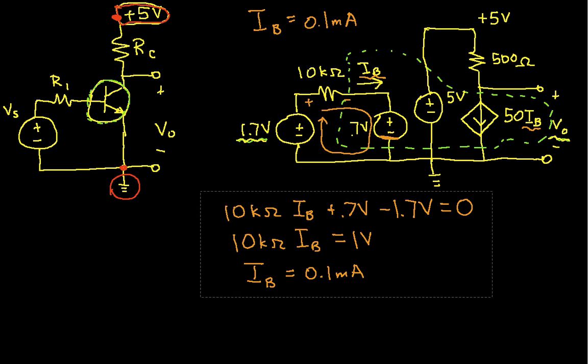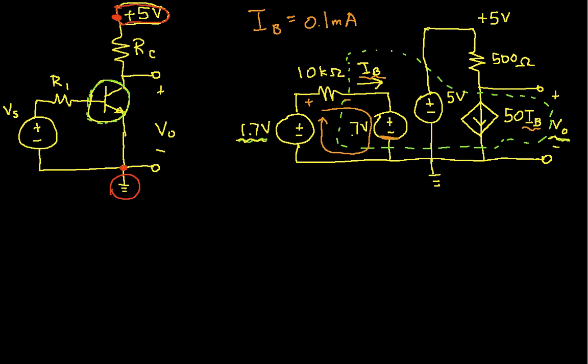In fact, we can get now the output voltage. So since we know that I sub B is 0.1 milliamps, we can say that the current flowing through this current source, this dependent current source, is 50 times I sub B. And so when we work that out, that gives us that the current through this source is 5 milliamps. And again, I got this 5 milliamps by multiplying I sub B times 50.